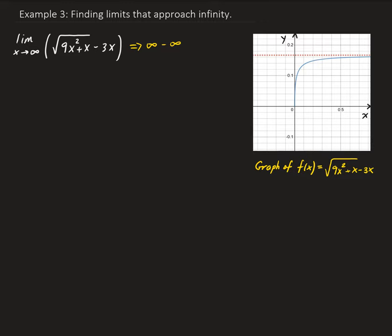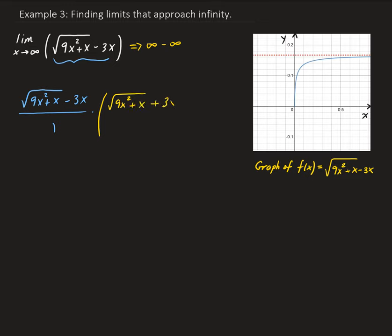So what we need to do is rewrite our original function. To do this, we're going to use the idea of the conjugate. So we have the square root of 9x squared plus x minus 3x, all over one. We're going to multiply the numerator by the conjugate, which is going to be the square root of 9x squared plus x plus 3x. And since we're multiplying this in the numerator, we need to multiply by the same expression in the denominator.